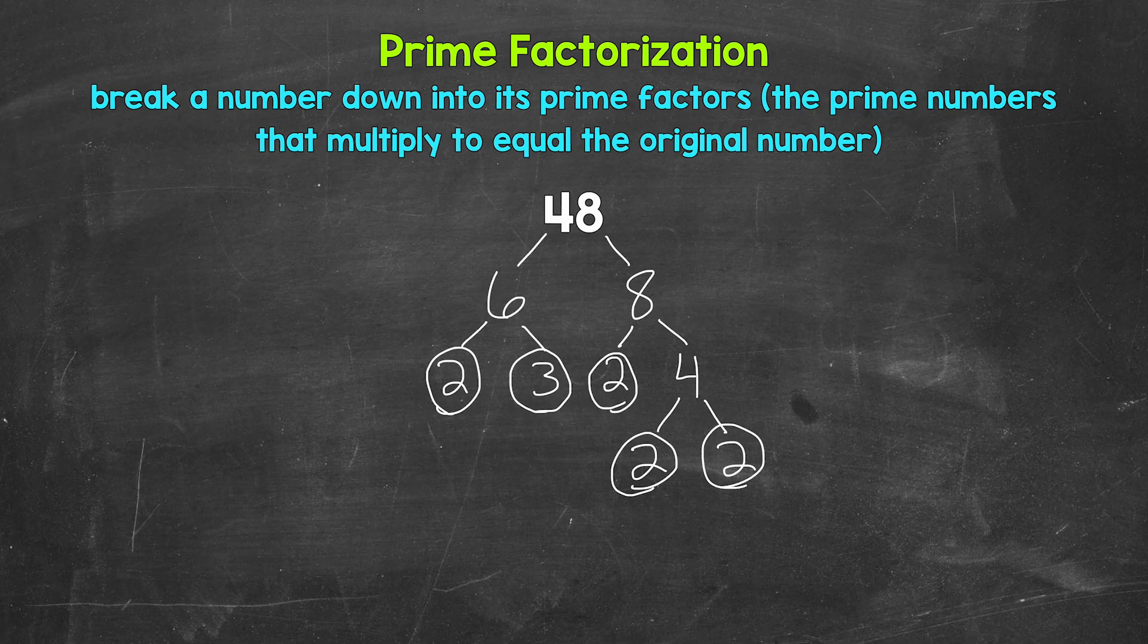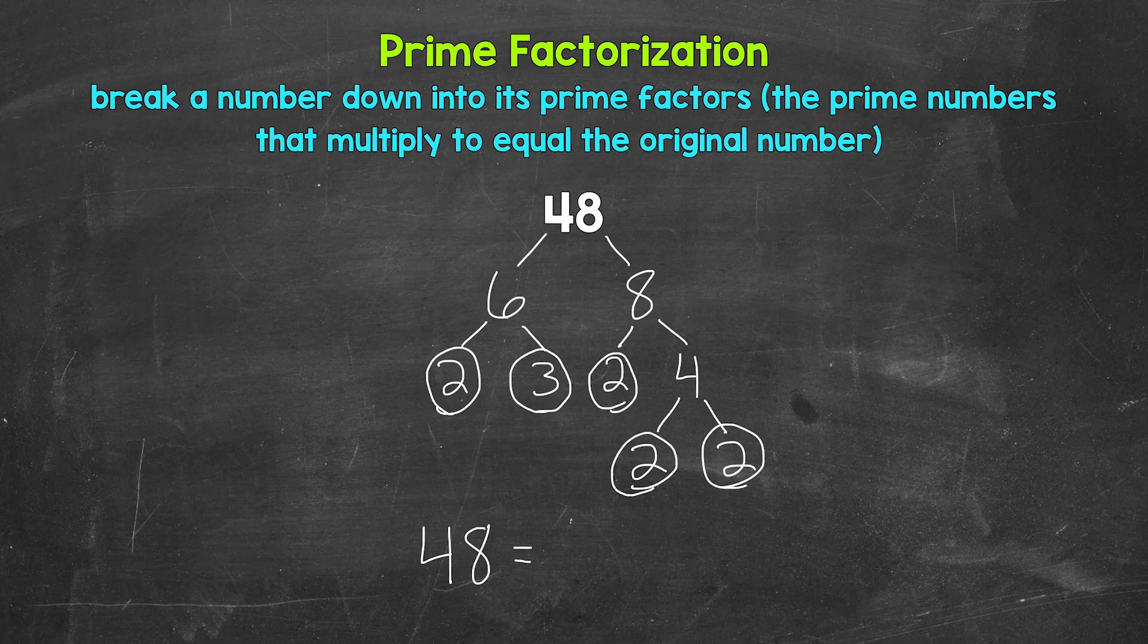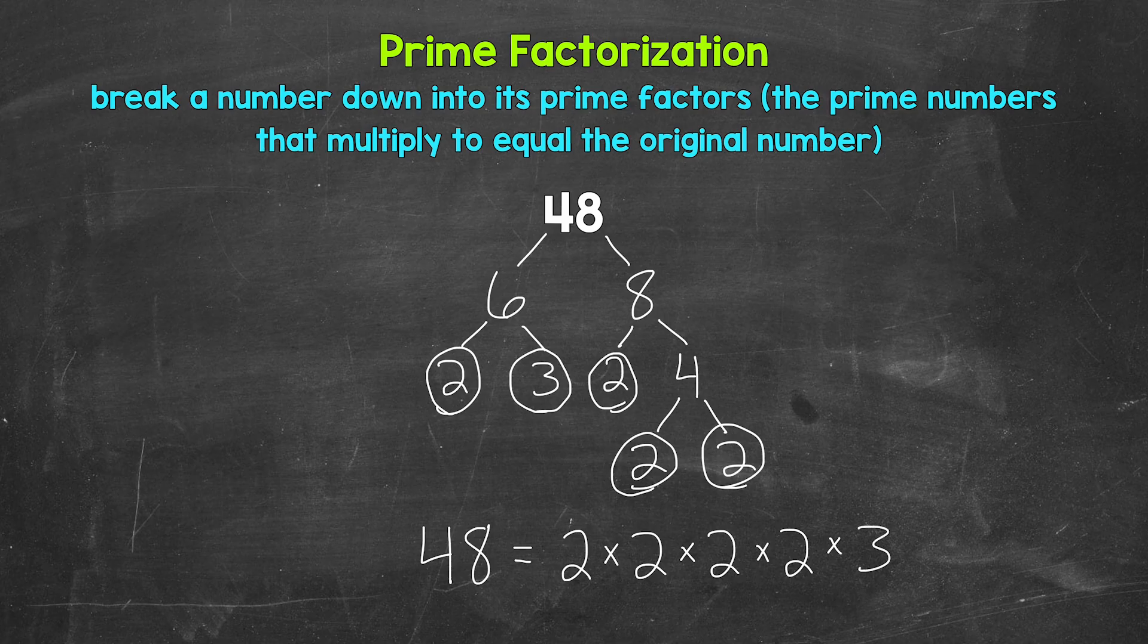And that's the prime factorization of 48. We cannot break anything else down any further. We have all prime numbers. So let's write this out as 48 equals, and I'll write our prime numbers here in order from least to greatest, and we are multiplying them. So we have four 2s. So 2 times 2 times 2 times 2, and then one 3, so times 3.